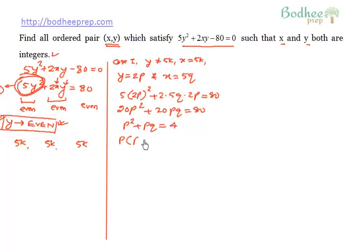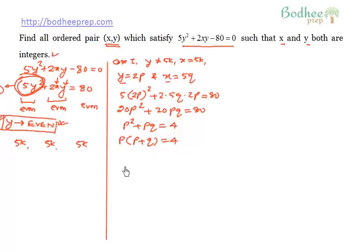This can be factored as p(p + q) = 4. Remember that the values of p and q, if they are integers, give corresponding values of x and y, because y = 2p and x = 5q. So the number of pairs of (p, q) will be the number of pairs of (x, y) respectively. The only ways that 4 can be written as the product of two integers are: p = 1 and (p + q) = 4; p = 2 and (p + q) = 2; p = 4 and (p + q) = 1. We can also take negative values.